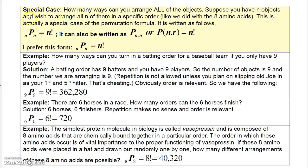I want to start you out with a special case of permutations here. Basically, I want to do a simple example. Suppose you have n objects and wish to arrange all n of them in a specific order, like we did with the amino acids. This actually is a special case of the permutation formula, and it's written as follows.